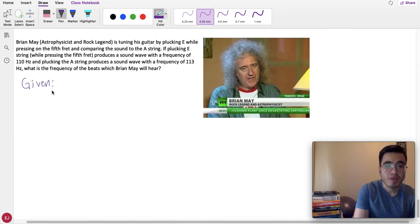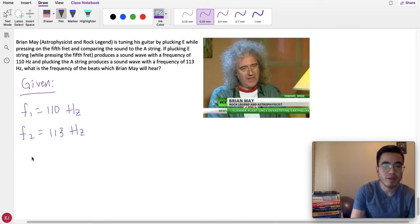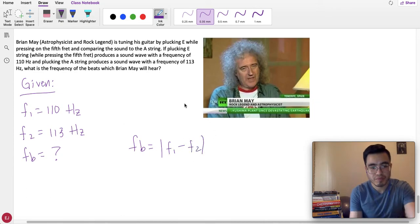Start with the given. We have two frequencies. So, frequency 1 is the one which we find first. That is 110 Hz. Then frequency 2, that's the next one which is 113 Hz. We want the frequency of the beat. I'm just going to write F and B. Question mark. The equation is frequency of the beats equals the absolute value of frequency 1 minus frequency 2. Let me redo that.